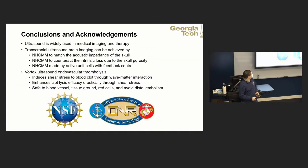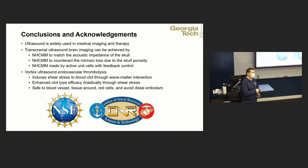As a conclusion, I've introduced our research on medical imaging and therapy using the non-Hermitian complementary metamaterial for transcranial ultrasound imaging of the brain — especially brain tumor imaging — and the vortex ultrasound to develop a fast and safe treatment method for cerebral venous sinus thrombosis and pulmonary embolism, diseases for which we currently have no effective treatment. Thank you, and I'd like to acknowledge support from NSF and ONR.